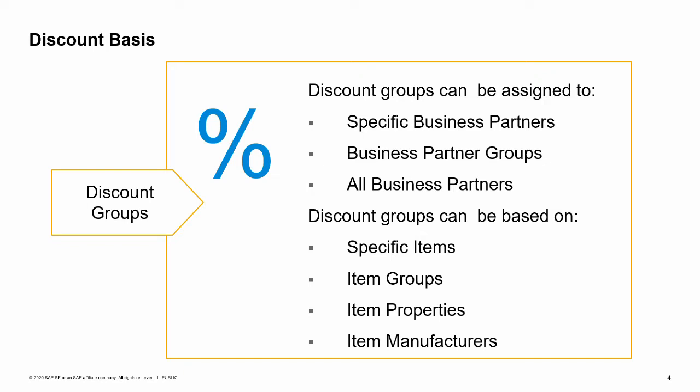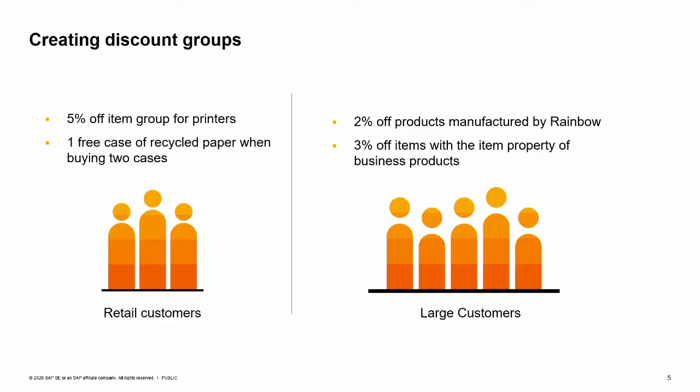Let us go through the different combinations of discounts you can create using discount groups. The first step is to think of the kinds of discounts appropriate to one or more business partners and group them together inside the discount group. For example, you may wish to give retail customers 5% off printers and an offer of one free case of recycled paper when they buy two cases. A different set of discounts may apply to the customer group for large customers — you might offer 2% off products from the manufacturer Rainbow and 3% off any items with the item property of business products.